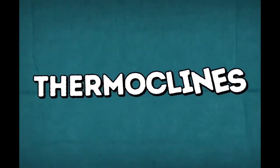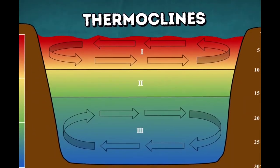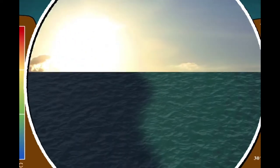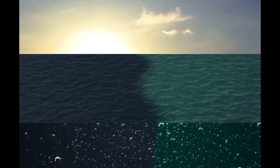There are also thermoclines, borders between water of different temperatures, like the warm water of the Gulf Stream and much colder North Atlantic Ocean.